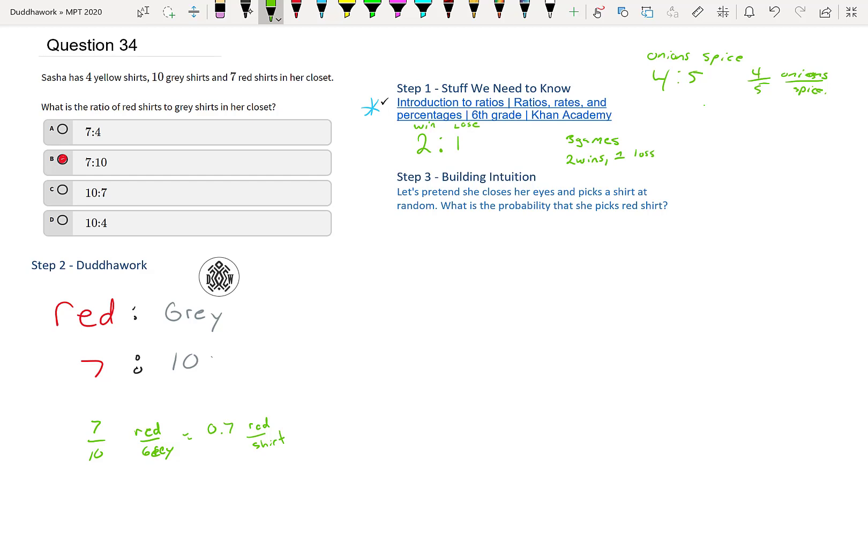So pretty easy question if you know what ratios are and how they work. But let's build some intuition, because it might not always be this easy. So let's pretend that Sasha closes her eyes and picks a shirt at random from her closet. What is a probability that she picks a red shirt? Well, then we need to know what a probability is.